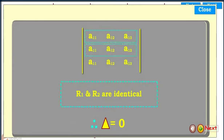On further simplification and converting into the determinant form, we get row 1 and row 2 are identical. Therefore, the determinant's value equals zero.